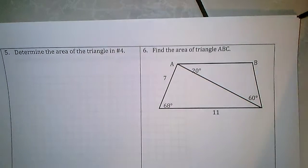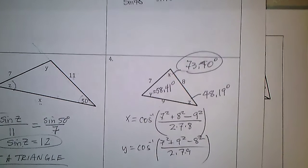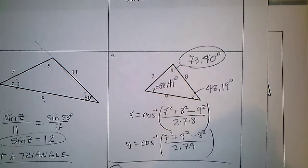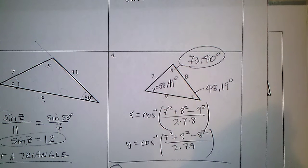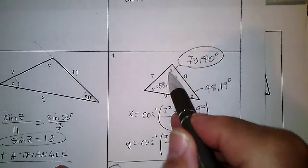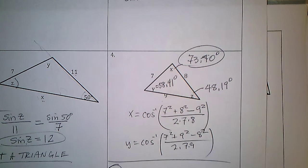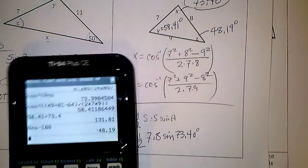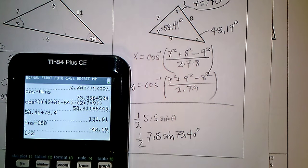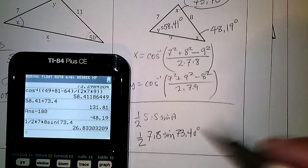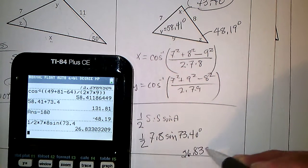Page two — find the area of the triangle in number five. The area of a triangle is one half times a side times another side times the sine of the angle between those two sides. Using the values already found: (1/2) × 7 × 8 × sine(73.40°), which gives the area as 26.83 square units.